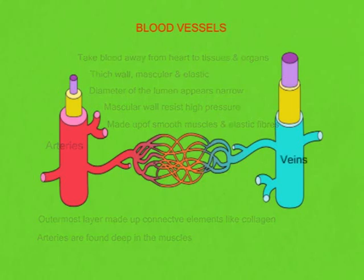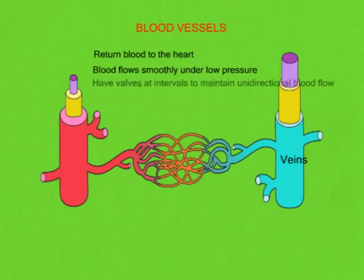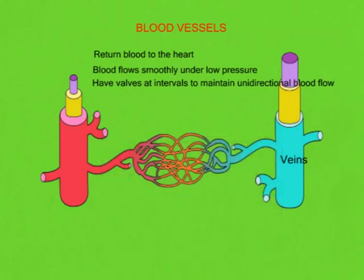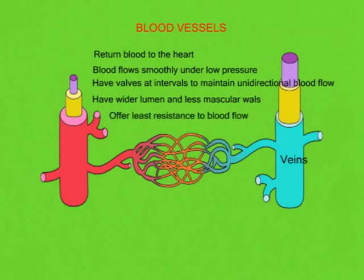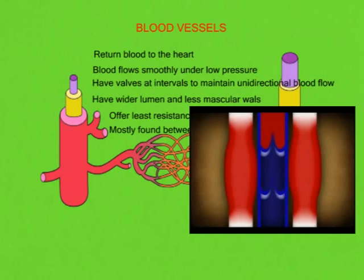Veins return blood to the heart. Blood in veins flows smoothly under low pressure. Veins have valves at regular intervals to maintain unidirectional flow. Veins have a wider lumen than arteries, and their walls are less muscular and elastic, offering minimum resistance to blood flow. Most veins are found between skeletal muscles. The skeletal muscles contract, squeezing veins and forcing blood to flow towards the heart.